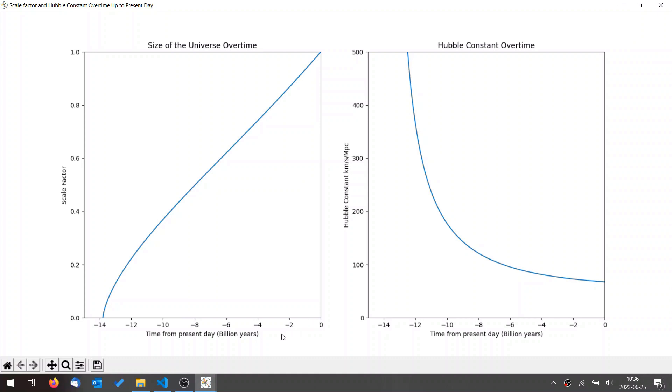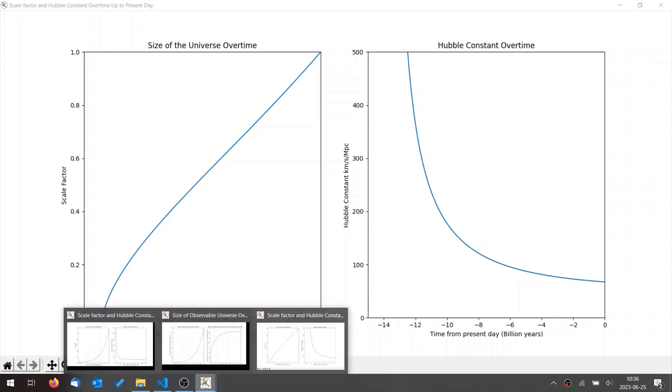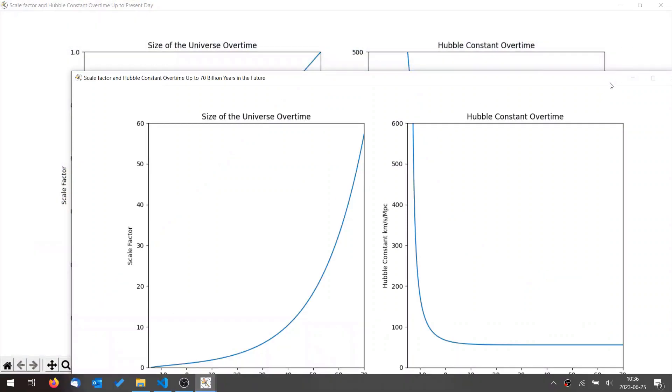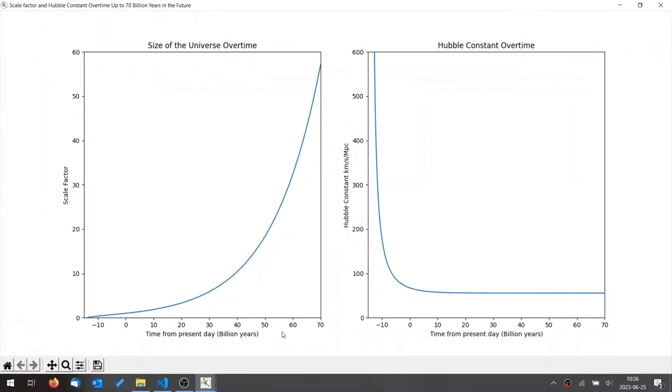So if this is how the universe has expanded in the past, how will it look in the future? Well, we can use the Friedman equations to calculate how it will expand in the future. And this is the expansion for the next going up to 70 billion years in the future. We can see while the Hubble constant was going down, it stops going down.